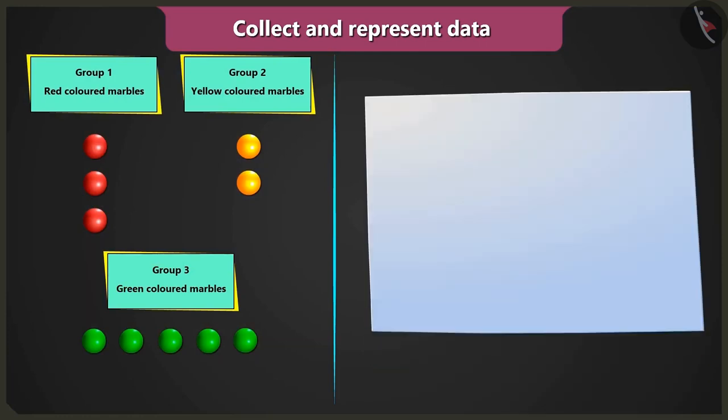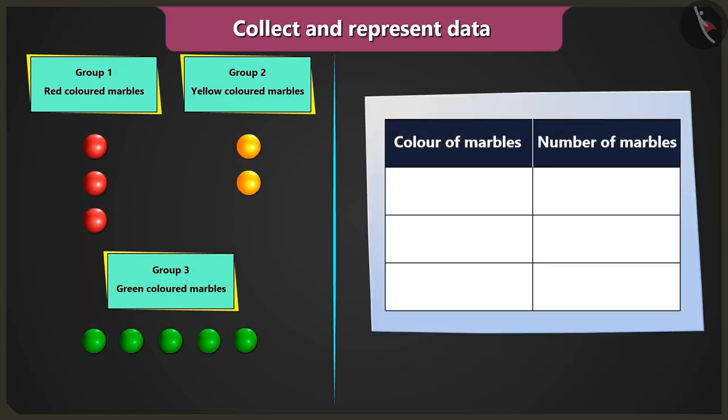Well done. Now create a table like this. Then? Now you have to write the names of the colors red, yellow, and green in the column color of marbles.